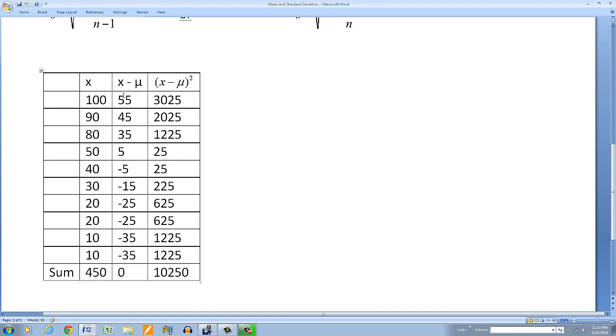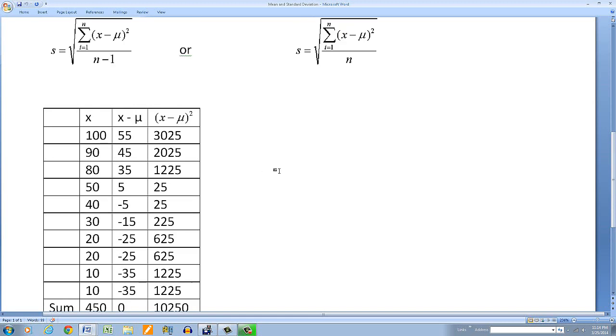Now if you add these up, this will always come out to zero, assuming they're exact values. Now sometimes you're going to have decimals. So there might be some kind of error here. So this might not be exactly zero. But if you have whole numbers here, this will always add up to zero. Then over here, this says every number to the left is squared. So 55 squared is 3025. 45 squared is 2025. 35 squared is 1225, and so on.